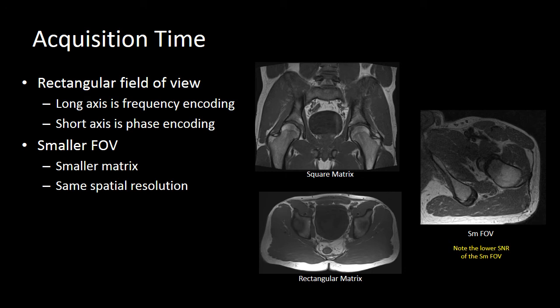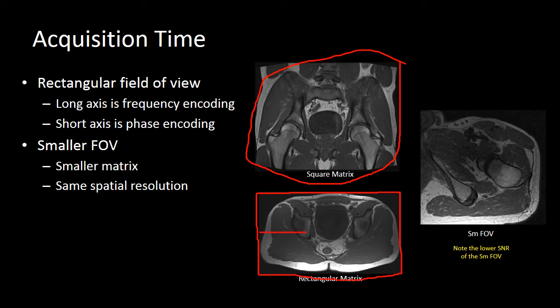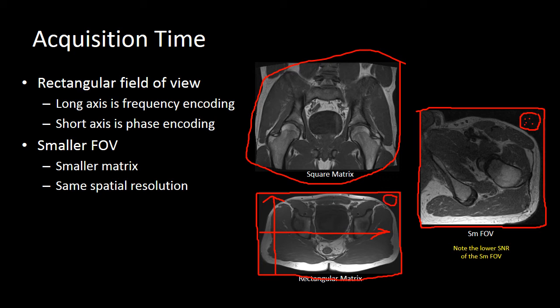Here's an example in the pelvis where we change the direction of our frequency and phase-encoded gradients. The first image has a square matrix with similar phase and frequency-encoded matrix sizes. When we have a rectangular matrix, we tend to make the frequency-encoded direction along the longer axis of our rectangle and the phase-encoded direction along the shorter axis. You can also make a much smaller field of view to reduce acquisition time, but you do increase noise — you can see more little specks in the corner representing noise.